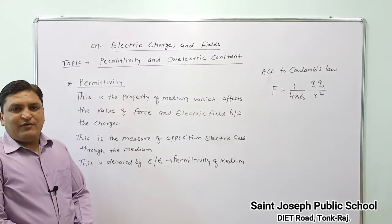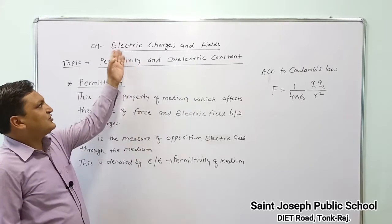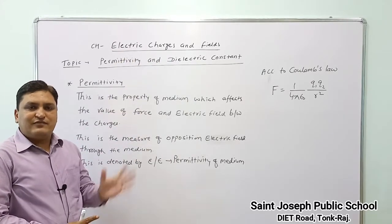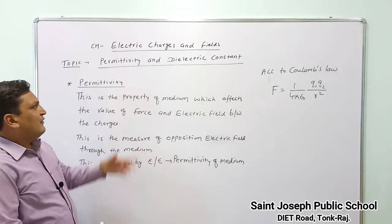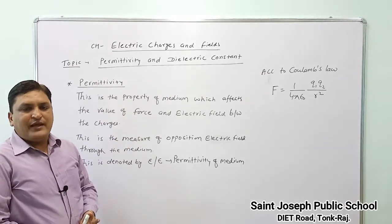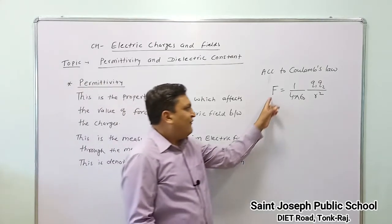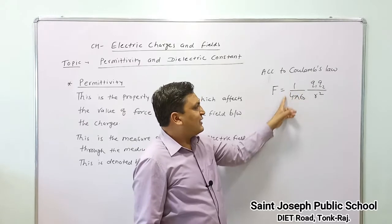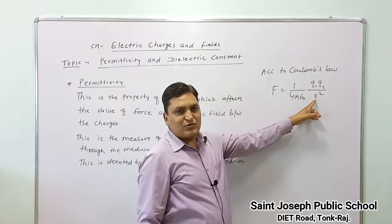We have already started unit number one, electrostatics, and the chapter is electric charges and fields. We have discussed many topics in last videos. In the last video we discussed about Coulomb's force and Coulomb's law, and the mathematical equation: F is equal to 1 upon 4 pi epsilon naught — called proportional constant k — then q1 q2 upon r square.